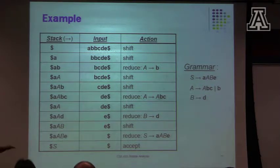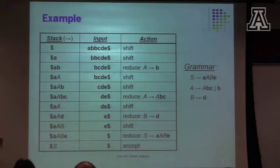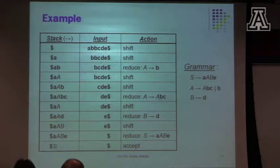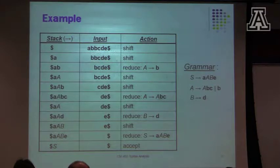That happens when you're building the compiler. You put in the time-consuming computation when you're building the compiler. Once the compiler has been built, the table is fixed, and the logic of the parser is really simple. So that's a good thing.